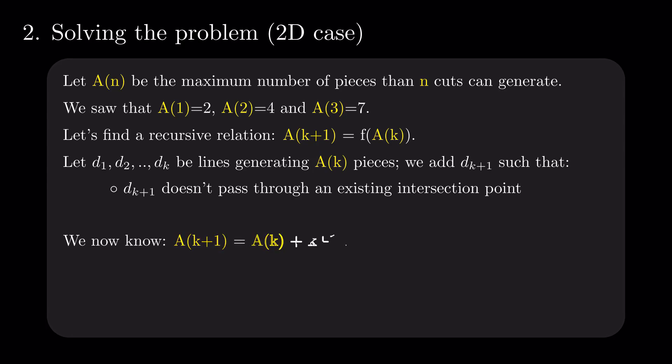Formally, a of k plus 1 is a of k plus k plus 1. We have the desired recursion for a with a general formula n times n plus 1 divided by 2 plus 1.